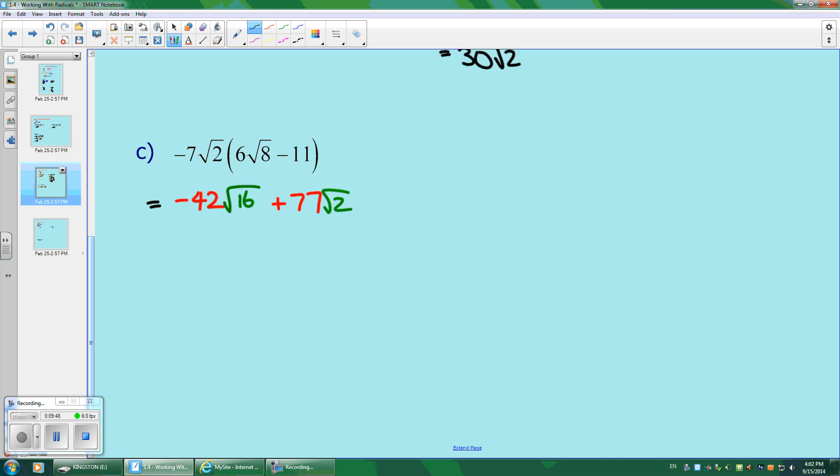So what we're going to do next is just simplify it if we can. We can take the square root of 16 and that ends up to be just 4. So we're going to multiply negative 42 times 4 plus, and since the root 2 can't be broken down further, we're just going to leave it alone. And that's going to give me 168 plus 77 root 2. And those can't be added because the 168 does not have a root 2. They're not like terms. That's as far as we can go.